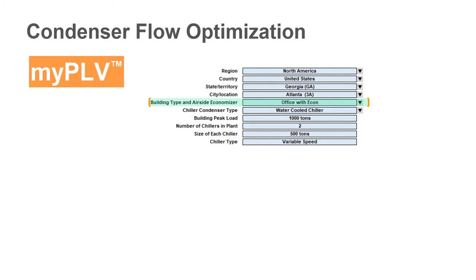The next thing you're going to enter in is the building type. We have 10 different building types loaded into MyPLV. If they don't have your building type, we do have an option to enter in a custom load profile. And then the last information here is going to be the building peak load, the number of chillers operating in the plant, the size of each chiller, and then the chiller type. Is it variable speed or fixed speed?